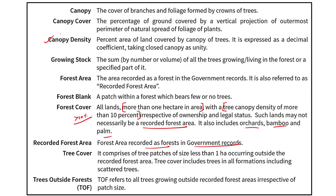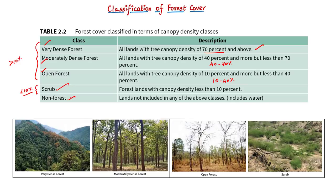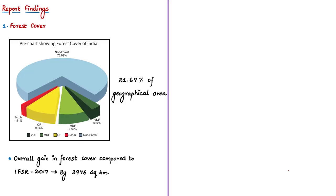Forest cover is classified based on canopy density into three types: Very Dense Forest, where tree canopy density is 70% and above; Moderately Dense Forest, with 40% to 70% canopy density; and Open Forest, with 10% to 40% canopy density. Forest lands with canopy density below 10% are called Scrubs, and all other lands are classified as Non-Forest.